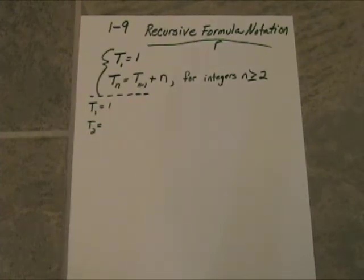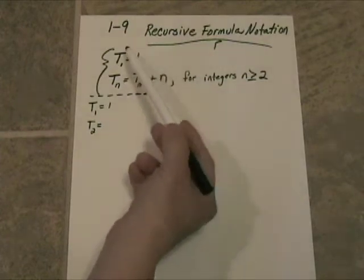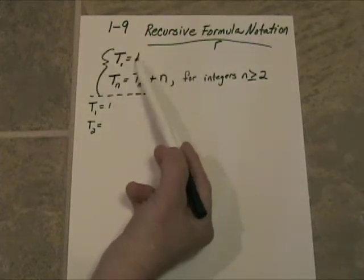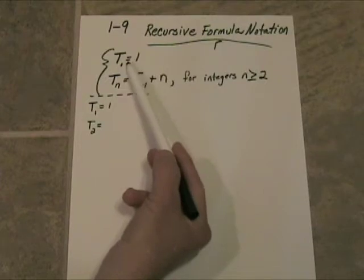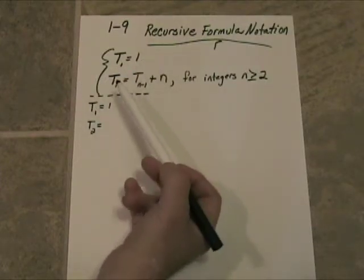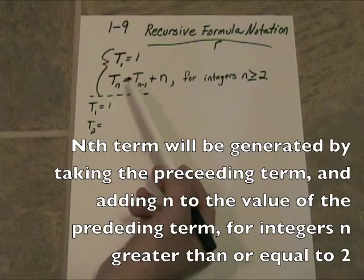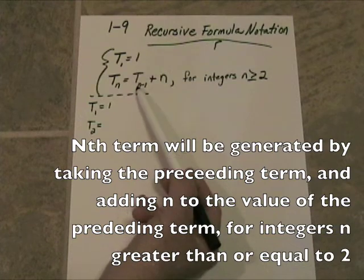Alright, this lesson is a little bit more with recursive formula notation. We recommend that you have viewed lesson 1-8 before you view this lesson. Alright, remembering that any kind of recursive formula is going to have two parts. You have to establish your first term, in this case t sub 1, it has a value of 1. And then you have to tell how to generate the nth term. The nth term will be generated by taking the preceding term,